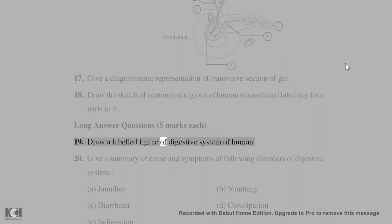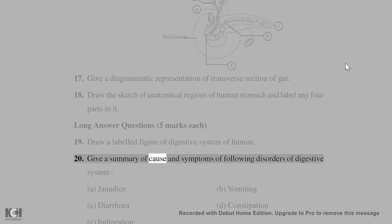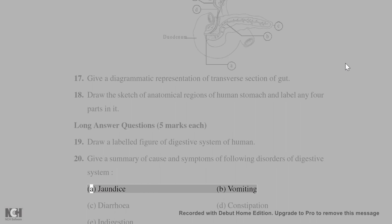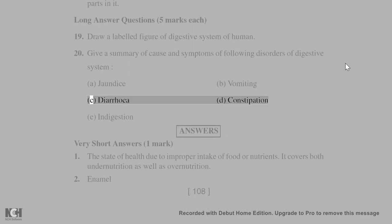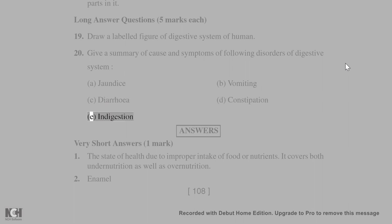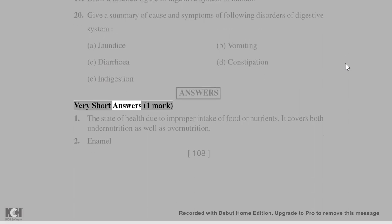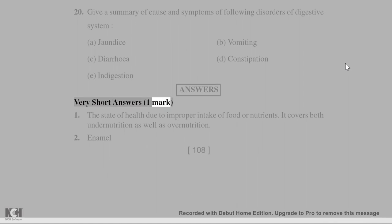Long answer questions (5 marks each): 19. Draw a labeled figure of the digestive system of humans. 20. Give a summary of the causes and symptoms of the following disorders of the digestive system: A. Jaundice, B. Vomiting, C. Diarrhea, D. Constipation, E. Indigestion.